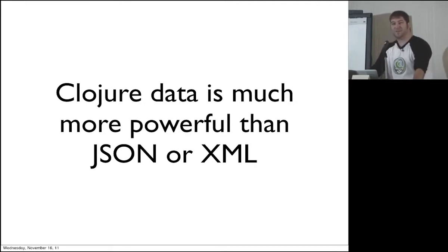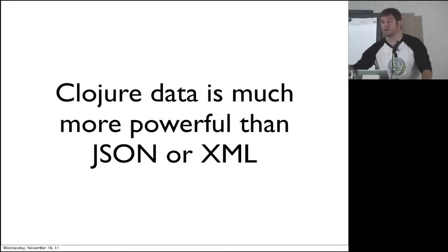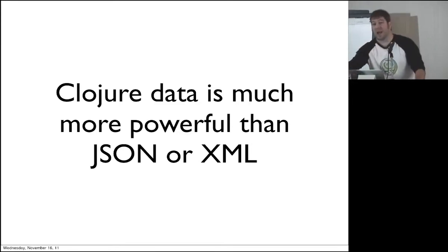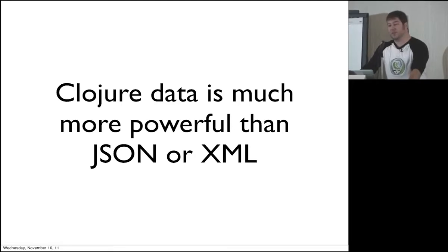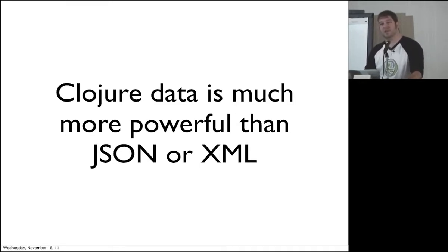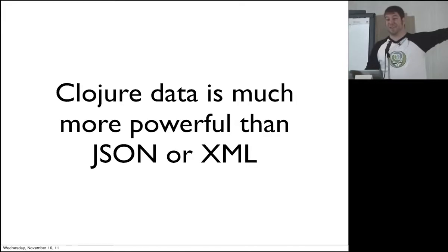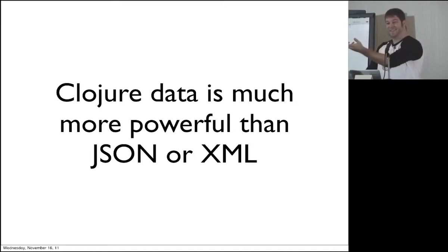Clojure data is more powerful than JSON or XML. I'm making a very broad assertion and a strong statement. I'll pick on JSON more than XML. XML is extensible — maybe not the prettiest to look at, but there's more behind XML than JSON. Have you ever tried to do a schema for JSON? JSON isn't expressive enough. What is the only thing we can represent in JSON? Lists. And what is the data contained in those lists? Strings. That's it. Clojure data is more powerful than that — Clojure data structures become data structures immediately. There is something more powerful there.